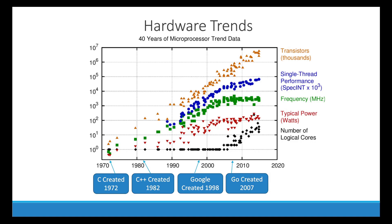To understand why Go was created we're going to have to look at some hardware trends. In 1998 Google was created with the goal of becoming the prominent search engine. This was going to require a lot of processing power — not only were they going to have to index the internet, they're also going to have to respond to many many user search requests all at the same time. Prior to 2007, Google developers were using languages like C++, which was based on a language called C. So why would we need a new language in 2007?